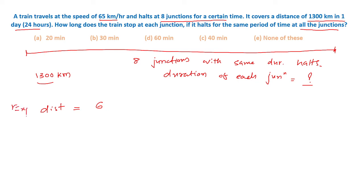But the actual distance is 1300 km. So the excess distance would be 1560 minus 1300, which equals 260 km.